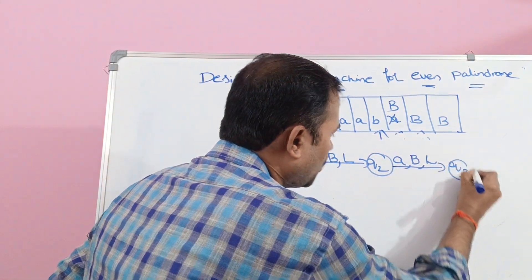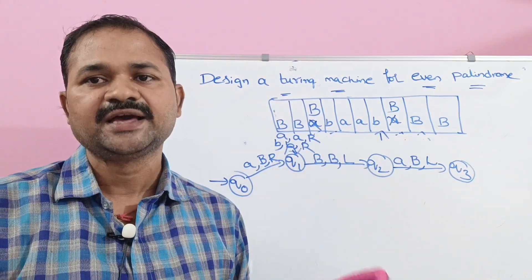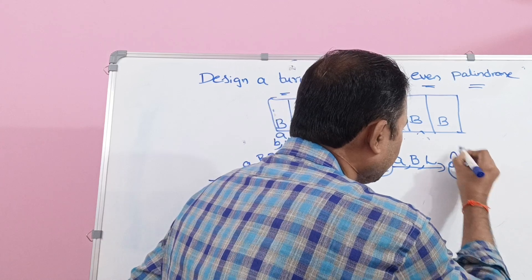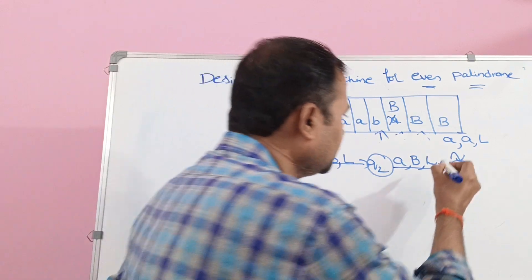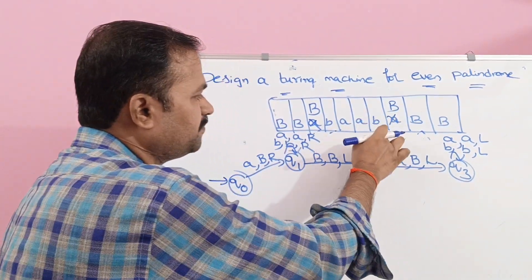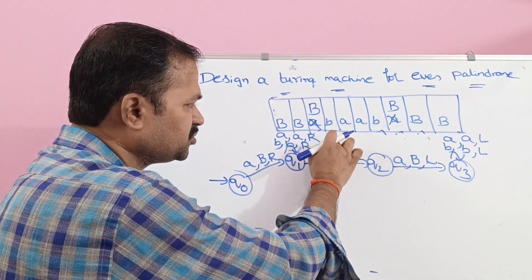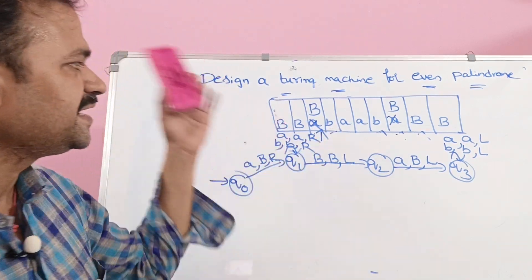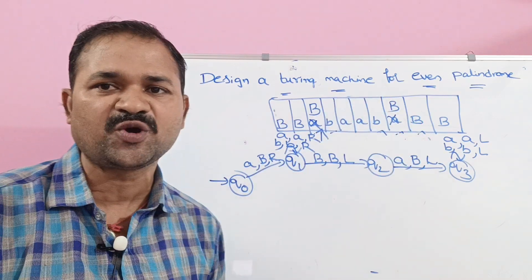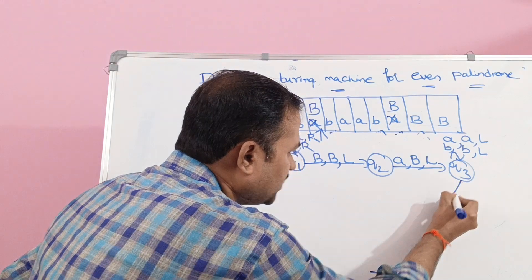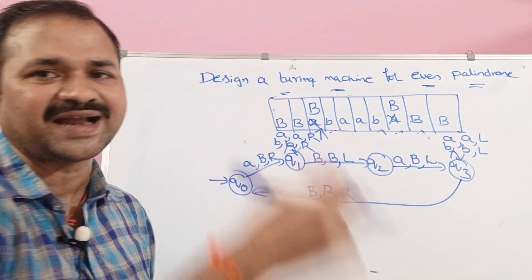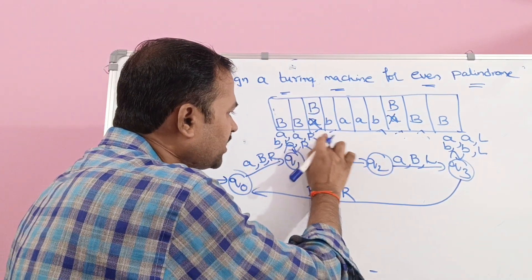Now we are at Q3. On Q3, if we apply any number of A's and B's, keep them the same but move the head one position to the left. So on Q3, if we read A, keep it the same and move the head one position to the left. We continue moving left. When we reach the blank symbol on Q3, keep it the same but move the head one position to the right to search for the next symbol.